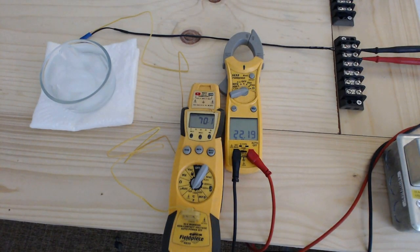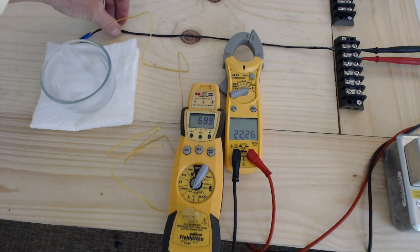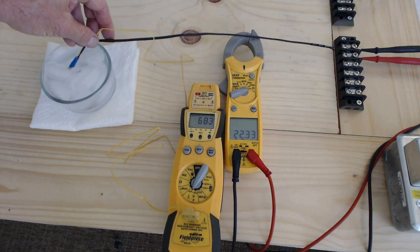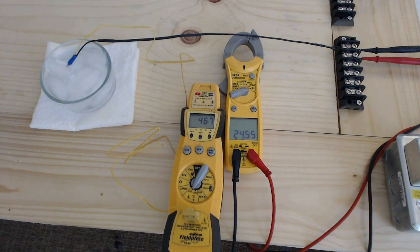This is a negative temperature coefficient thermistor, and we're going to drop it into this bowl of ice water. You're going to see the resistance change.